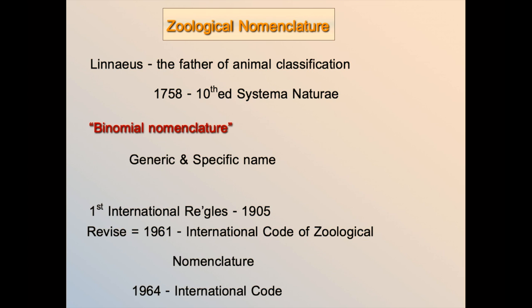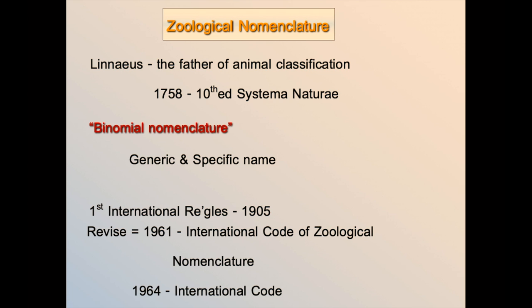So zoological nomenclature is needed. If we classify animals into groups, we need to give them names. As I already talked about in the first lecture, right now we use the system of Linnaeus — the binomial nomenclature. The first name is the generic name and the second is the specific epithet. For animals, ICZN takes care of this system until now.